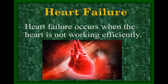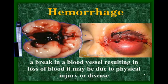Heart failure means the heart stops working efficiently, and there can be many causes. Hemorrhaging involves much greater blood loss than a bruise — a larger blood vessel such as a vein or artery ruptures. One image shows blood pooling inside the body from a ruptured vein, and another shows hemorrhaging in the eye with a large bulge of blood under the skin. It results in a large loss of blood and may be due to physical injury or disease.